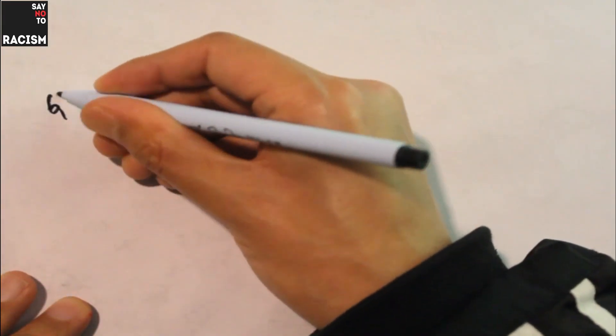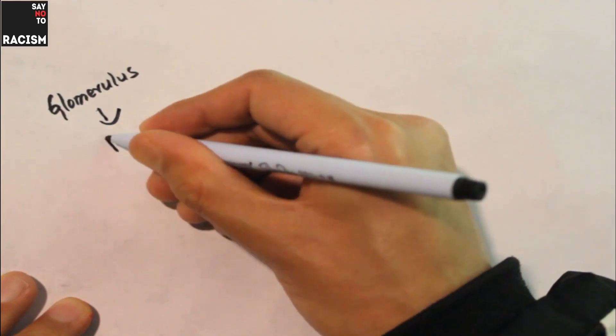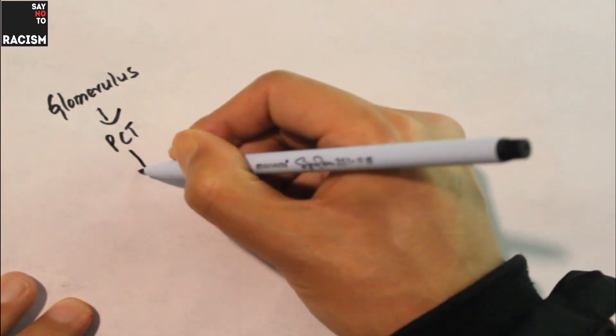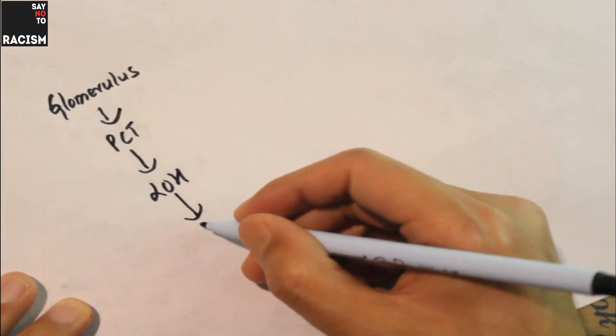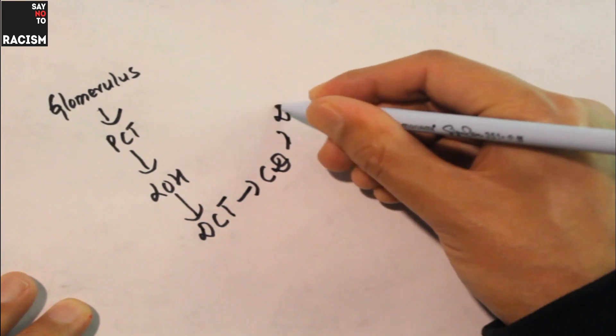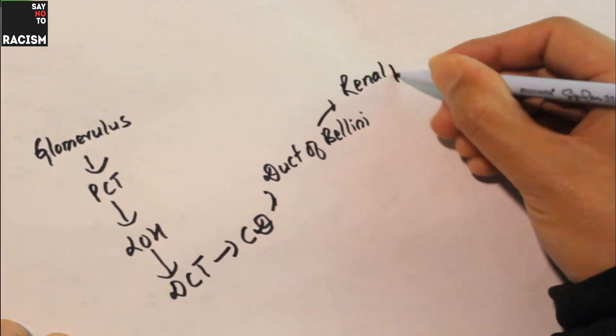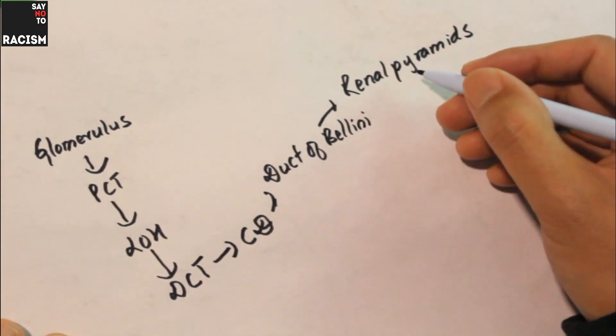Now in the structure of the nephron we also talk about how the urine flows. After glomerular filtration occurs, the filtrate will become urine in the future. The sequence: first we have the glomerulus, after glomerulus we have the PCT (proximal convoluted tubule), then loop of Henle, then the filtrate flows towards the DCT (distal convoluted tubule), then into the collecting duct, then into the duct of Bellini, then into the renal pyramids.